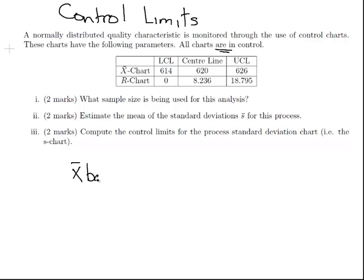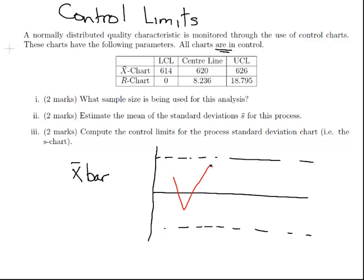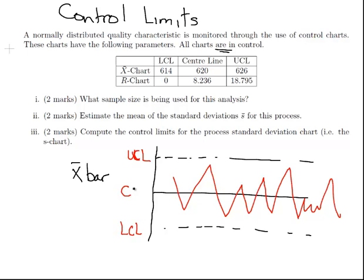These charts have the following parameters. All charts are in control. We have an X bar chart with the lower control limit, the center line, and the upper control limit given. It looks something like this - our chart here goes up something like that.